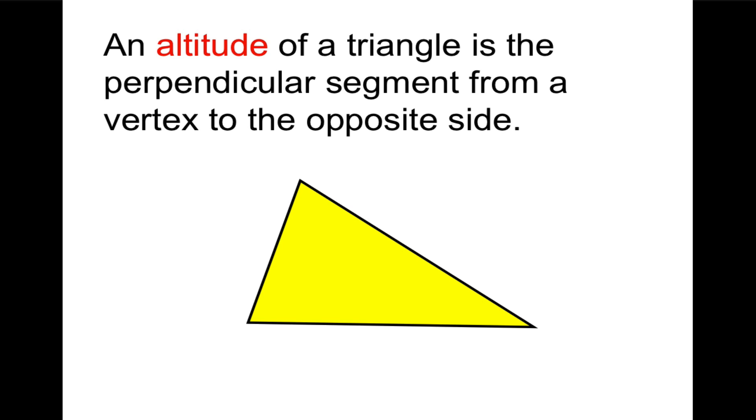You know an altitude of an airplane would be its height, right? How high is it up in the air? And it's similar here. An altitude of a triangle is the perpendicular segment from a vertex to the opposite side. So the vertex is the highest point of the triangle, and the opposite side would be the base. So it's perpendicular to the base, like this. It comes down from the vertex, and it makes a 90 degree angle with the base. That's called the altitude.